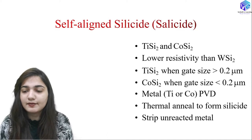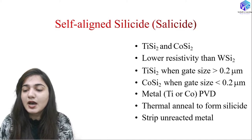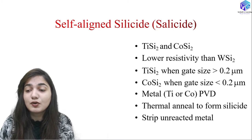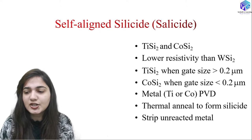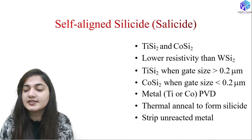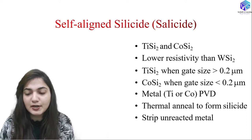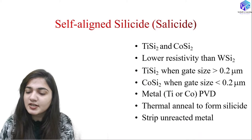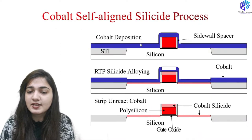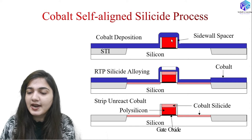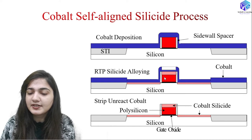Now coming to the self-aligned silicide — we can use titanium silicide and cobalt silicide. These have lower resistivity, meaning higher speed compared to tungsten silicide. Titanium silicide is used when gate size is greater than 0.2 micrometers; cobalt silicide when gate size is less than 0.2 micrometers. We use metal PVD — titanium or cobalt PVD — followed by thermal annealing to form the silicide, then strip off the unreacted extra metal. In the cobalt self-aligned silicide process: deposit cobalt over the structure with sidewall spacers, perform rapid thermal processing for silicide alloying, then strip off the unreacted cobalt to get the cobalt silicide formation.